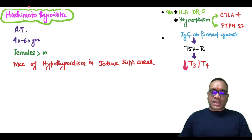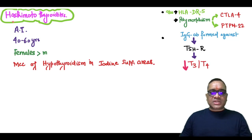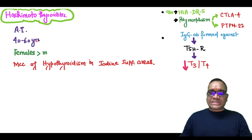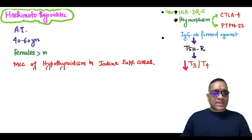Hello everyone, this high-yielding short is about Hashimoto thyroiditis, which is an autoimmune disorder commonly seen in females in the range of 40 to 60 years of age.